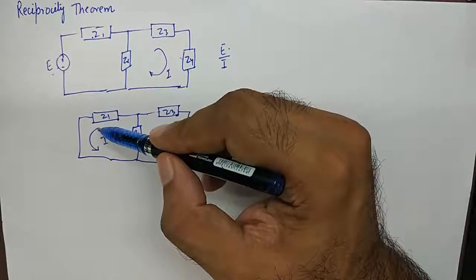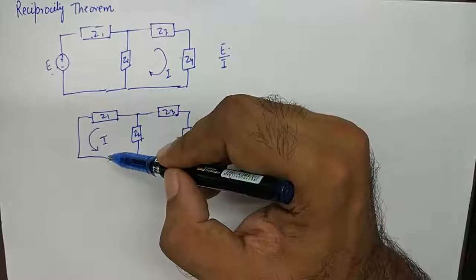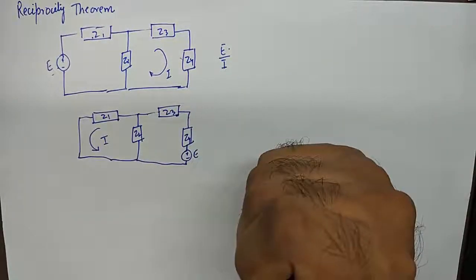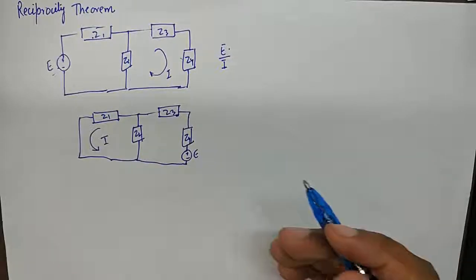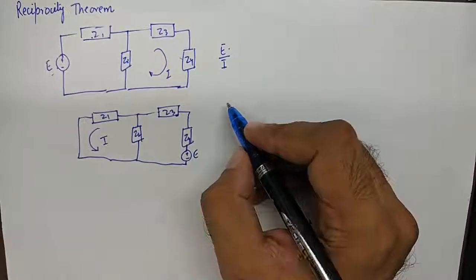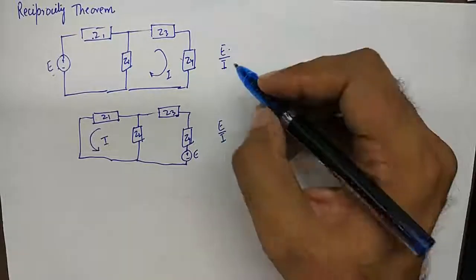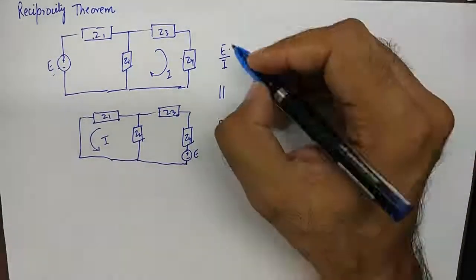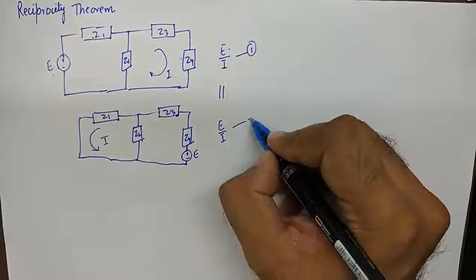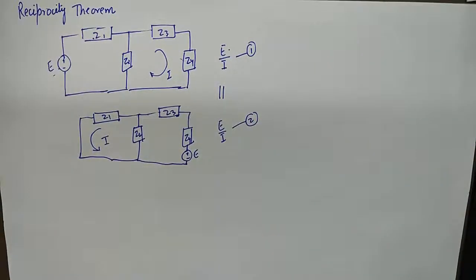Secondly, now we calculate the current in the same branch where the voltage source was located. And if you do simple mathematics, now in this case it will be E upon I, and they both should be equal. This one and this two, they both should be equal.